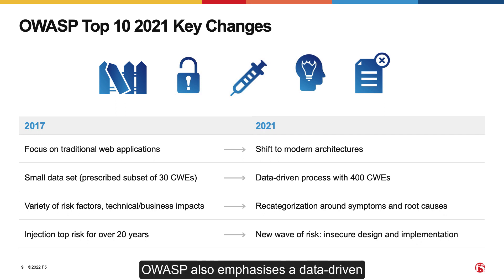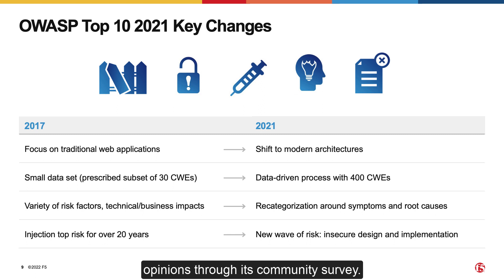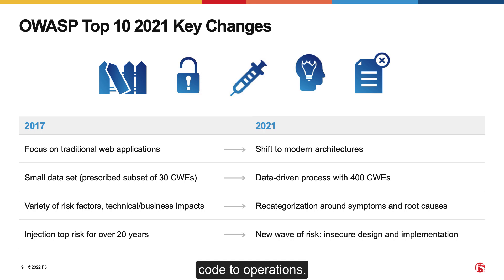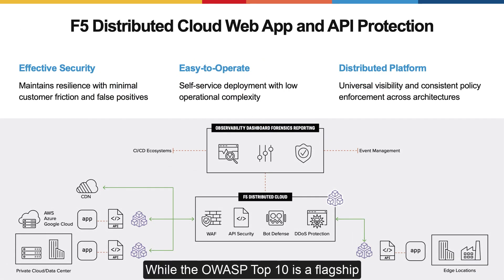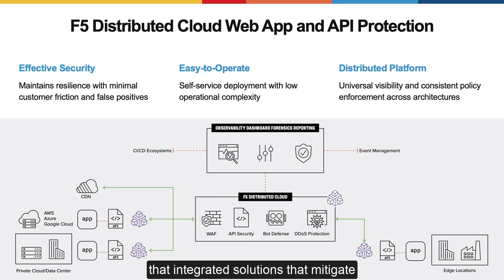OWASP also emphasizes a data-driven methodology in its 2021 update to capture more weaknesses and potentially more vulnerabilities, as well as giving more credence to security practitioner opinions through its community survey. For 20 years the top risks remained largely unchanged, but 2021 brings a new wave of risks in application security — specifically the need for security end-to-end, from architecture to design to code to operations. There is considerable overlap between OWASP's web app and API projects, and it is increasingly clear that integrated solutions that mitigate vulnerabilities and abuse for web apps and APIs are in order.